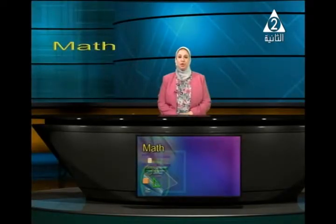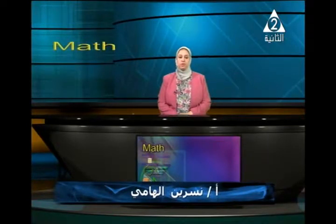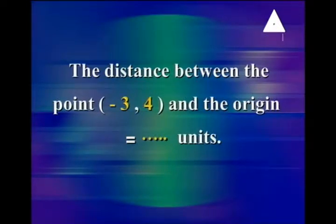Hello, my students of third prep. Today we are going to have a general exercise on all we have learned in the previous lessons. Let us start with the first question: complete the distance between the point negative 3 and 4 and the origin equals how many units.